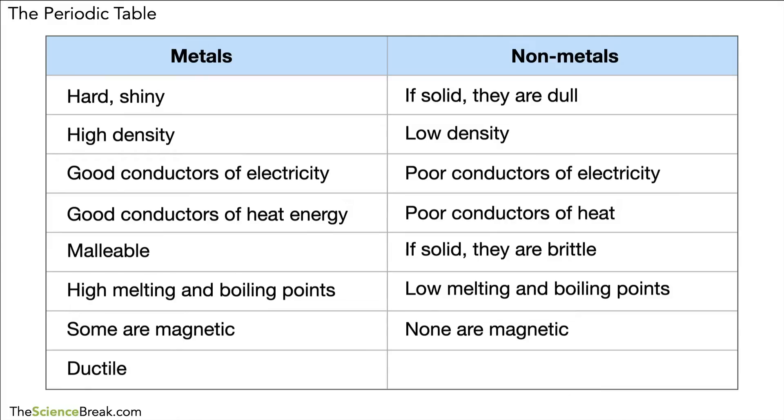And then the final point here is that metals are what we call ductile. That means they can be drawn into long wire shapes quite easily. Whereas the non-metals, they are not ductile; they can't be drawn or pulled into wire shapes. And as we said before, they are brittle, so they crack easily rather than being able to be drawn into long wire shapes.